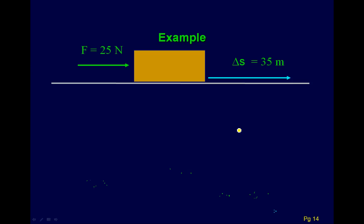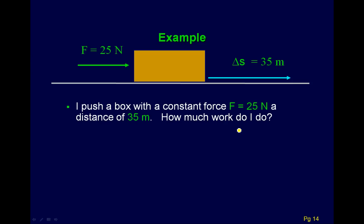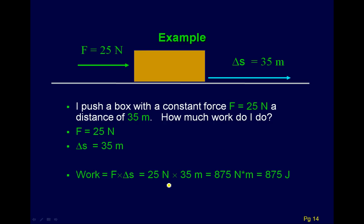Here's an example: I'm pushing on a box with a force of 25 newtons through a distance of 35 meters. How much work do I do? Using our equation, work equals force times distance: 25 times 35 gives 875 joules. This isn't too difficult. About 50% of our work examples will be this simple, so be careful not to make it seem more complicated than it really is.